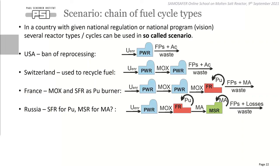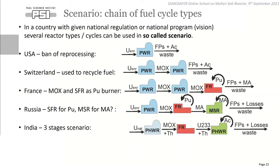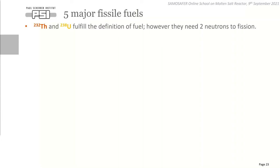These cycles can be put into chains called scenarios, which depend on national regulation or national program. In the USA there is a ban on reprocessing, so irradiated fuel is considered waste as-is. In Switzerland, recycling used to be practiced but is no longer allowed. In France, recycled MOX was meant for sodium fast reactors to multi-recycle plutonium, with minor actinides considered waste — though they have now changed strategy and postponed fast reactor deployment.